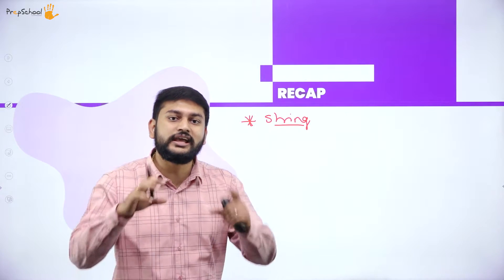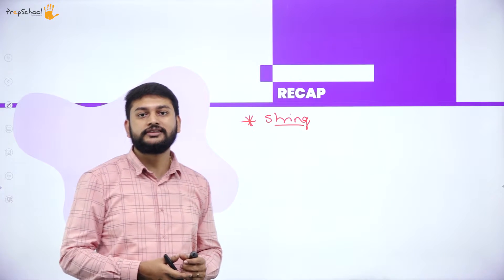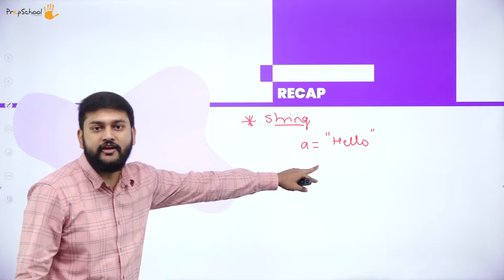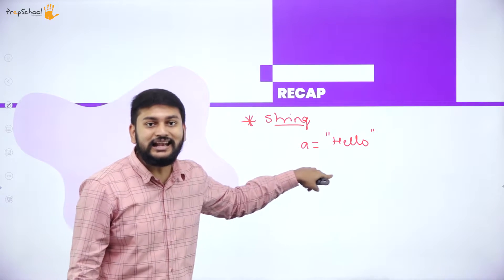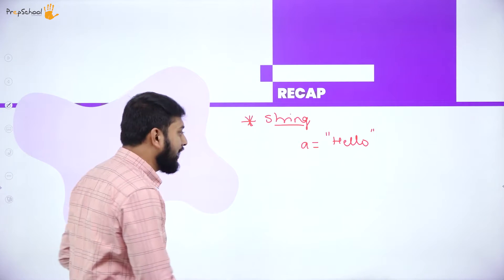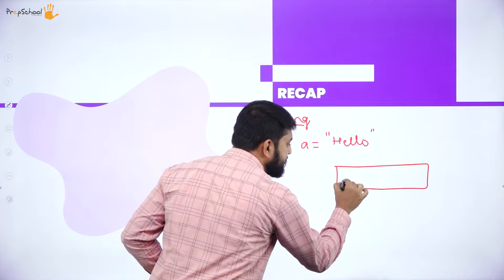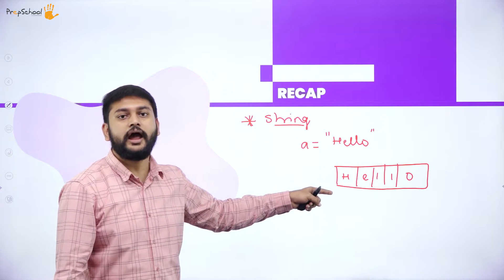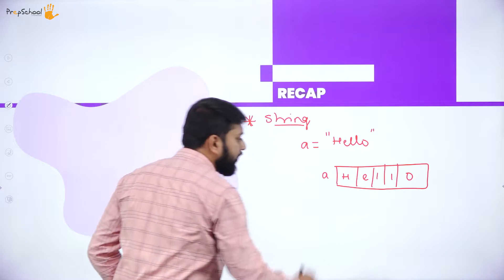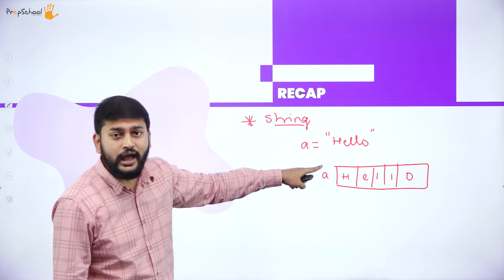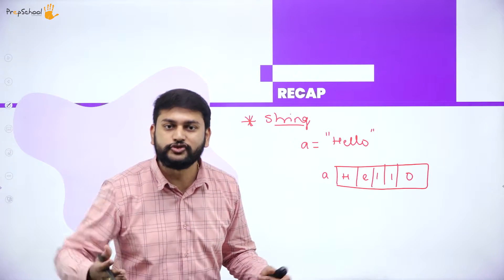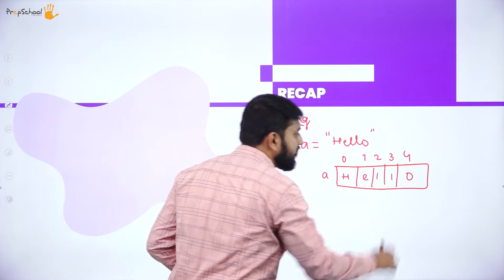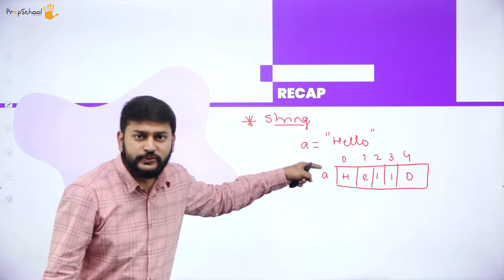How exactly is a string represented in the memory location? Suppose I take a variable 'a' and store the string 'hello' in it. This is how the string 'hello' is represented in memory. With the help of the name of the string — 'a' — I can access all the characters stored in it, using something called indexing: 0, 1, 2, 3, 4.